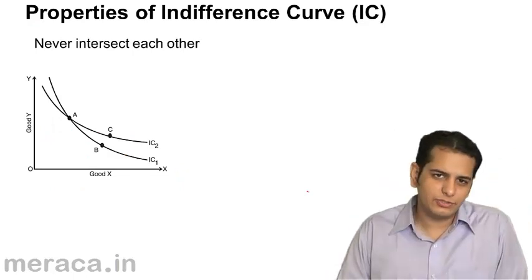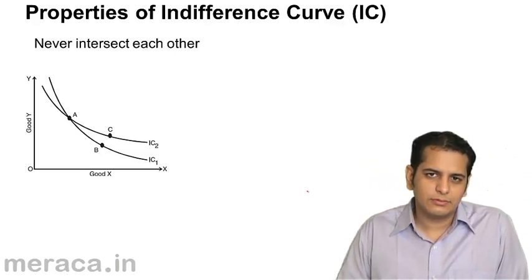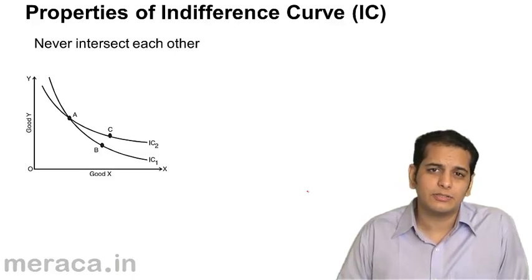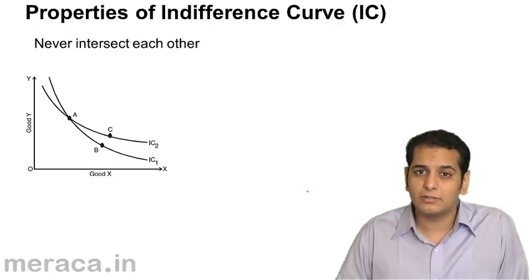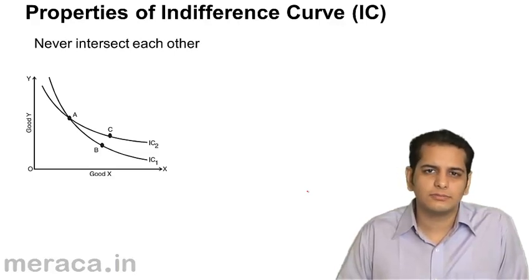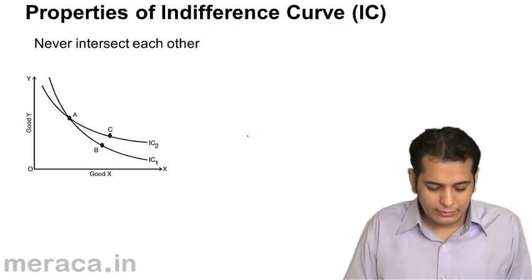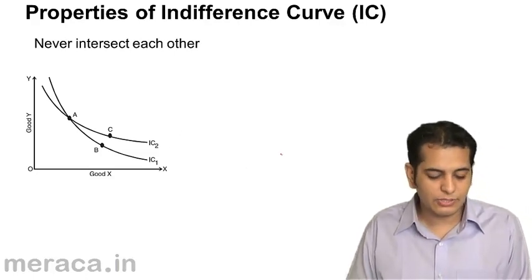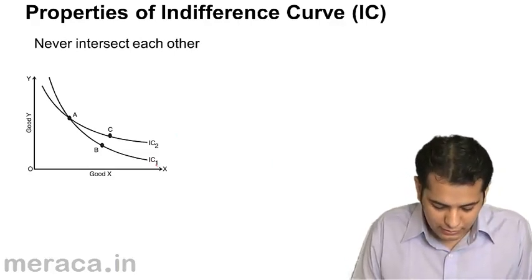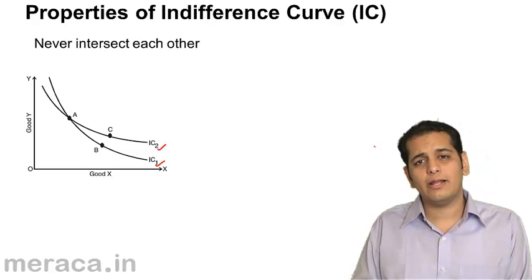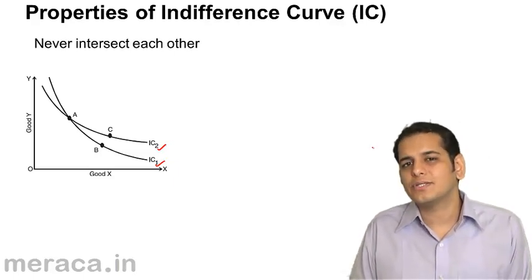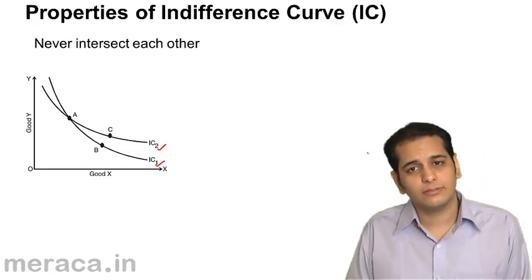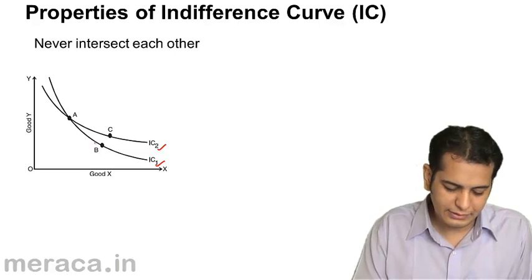The next property is that two indifference curves never intersect each other — they are always parallel. To prove this, let's assume two indifference curves IC1 and IC2 do intersect each other and show that this cannot happen.